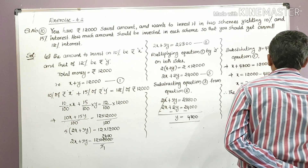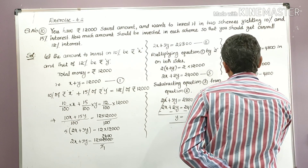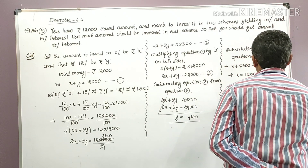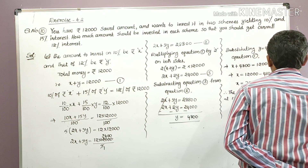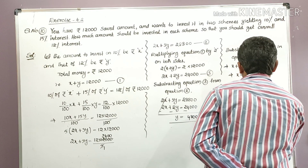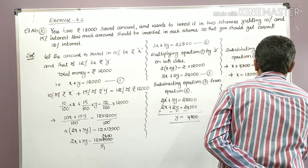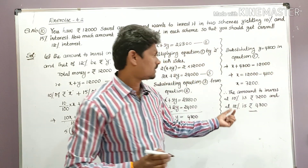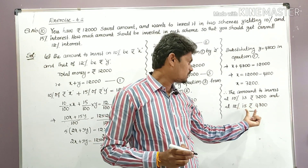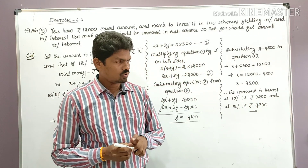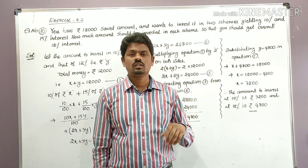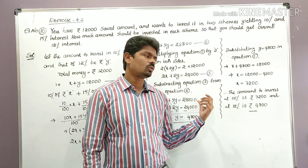Therefore, the amount to invest at 10 percent is rupees 7,200, and the amount to invest at 15 percent is rupees 4,800. So like this we can solve problems from Exercise 4.2.